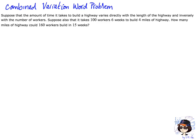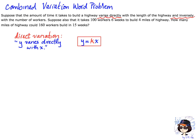There is a lot going on here. The reason it's called a combined variation word problem is because it has both a direct variation situation and an inverse variation situation. A direct variation situation has wording like: y varies directly with x. That always has this kind of equation: y is equal to some constant k times the variable x. K is some constant.